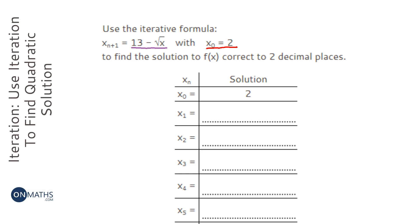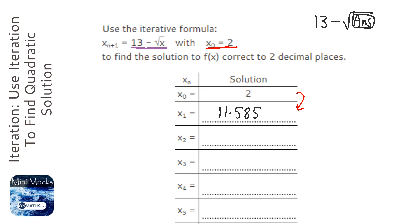This next step is actually pretty clever with these calculators. You can type in 13 minus square root answer, and on calculators it's normally ANS or some write the word answer. When you press equals it will give us the answer. You might need to press S to D to make it a decimal. So we write down the answer: 11.5857.